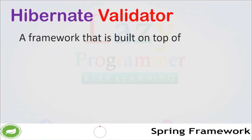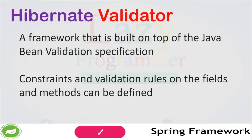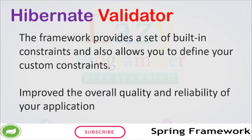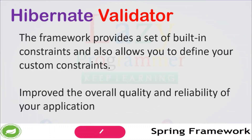Let's talk a bit about Hibernate Validator. It's a validation framework for Java that is built on top of the Java Bean Validation specification. With Hibernate Validator you can define constraints and validation rules on the fields and methods of your data model using annotations as well as XML files. The framework provides built-in constraints such as @NotBlank, @Size, @Min, and @Max, using which you can also define your own custom constraints. By using Hibernate Validator you can ensure that data entered by the user or received from external sources conforms to the rules defined in your data model, improving the overall quality and reliability of your application.